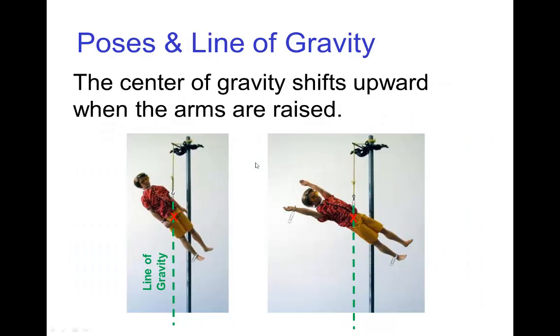Now as was mentioned before, the center of gravity will shift according to a character's pose, and so here we see the doll. When the doll raises its arms, then the location of the center of gravity shifts higher in the torso, and we see that indicating here from this hanging pose that the position of the line of gravity shifts with it.